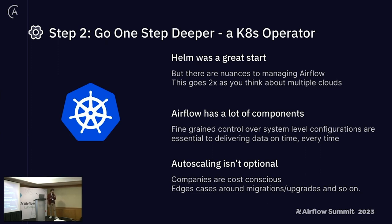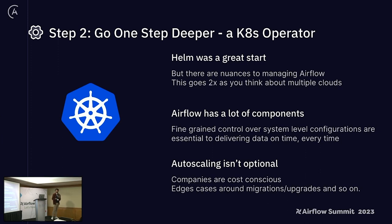Another thing we found is that Airflow has a lot of components and we wanted to add more: the scheduler — which you can run one or many — a web server, workers, a database, and the triggerer. Providing a really reliable service requires fine-grained control of all these different components. What if your triggerers want to auto-scale? What if you want to scale up and down the number of schedulers? You really need fine-grained control, especially around Airflow upgrades or migrations. And auto-scaling wasn't optional — people wanted to scale up based on load, with lots of DAGs kicking off at UTC midnight, and not pay for idle infrastructure. So we built a Kubernetes operator that extends the Kubernetes API to give us more fine-grained control of core Airflow components, letting us provide a reliable and scalable service.